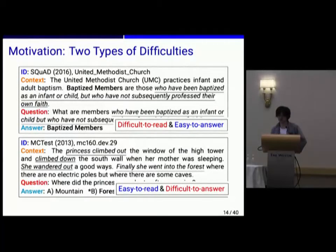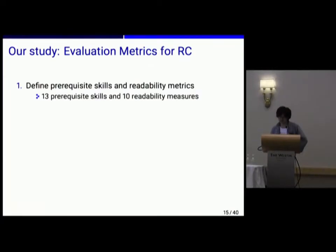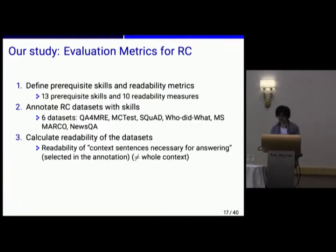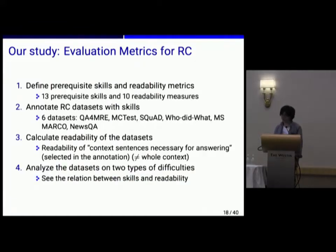From this observation, we are interested in the relation between two types of difficulties: difficulty in reading and difficulty in understanding. In this study, our goal is to establish a general methodology to assess the quality of datasets and the performance of systems. Our methodology consists of four steps: first, we define a set of basic skills required to answer questions and text readability metrics; next, we annotate RC questions with the defined skills; after that, we calculate readability measures for context sentences necessary for answering; finally, we analyze the dataset in terms of the two types of difficulties.